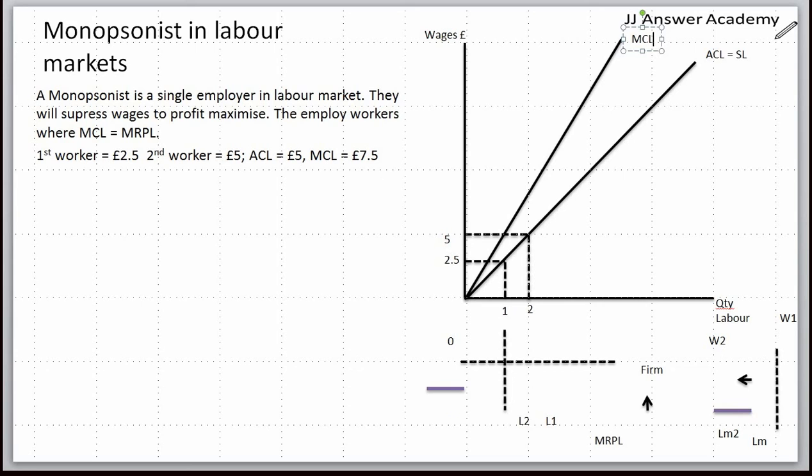The demand curve for the monopsonist is the marginal revenue product of labor, so MRPL equals MCL over here. The monopsonist will employ three workers where MCL is equal to MRPL. The market wage he'll be paying to all these three workers would be here at 7.5.